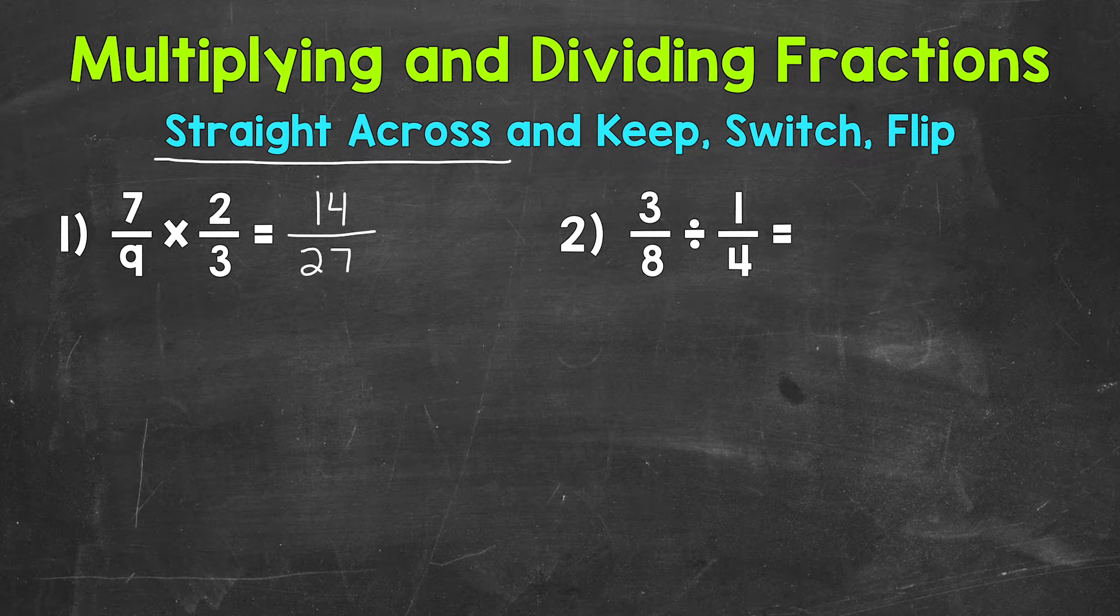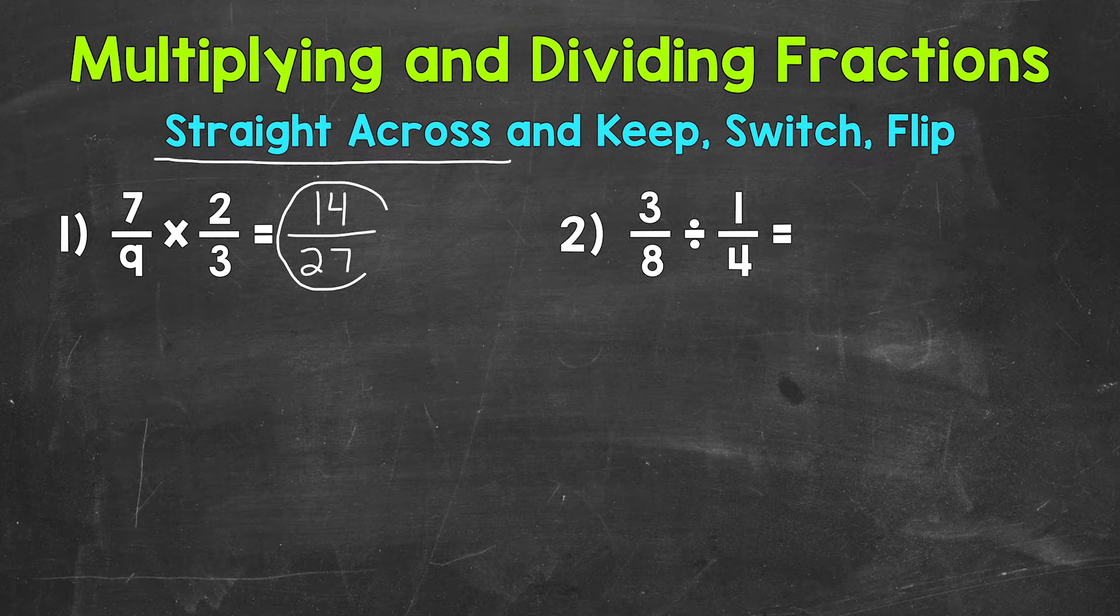Always look to see if you can simplify, but in the case of number one, the greatest common factor between 14 and 27 is one. That means we are in simplest form and done with the problem. So final answer for number one, 14 27ths. And again, when we multiply fractions, multiply straight across.